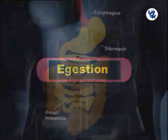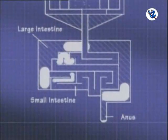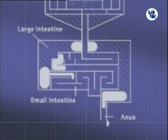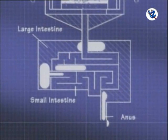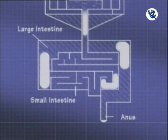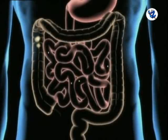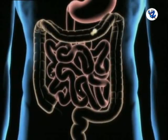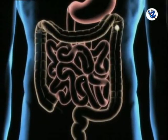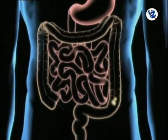Then ejection — the unwanted and undigested residue of the food is passed into the large intestine. Here, remaining water is reabsorbed and semi-solid feces is formed. Throwing of feces through the anus is called ejection.